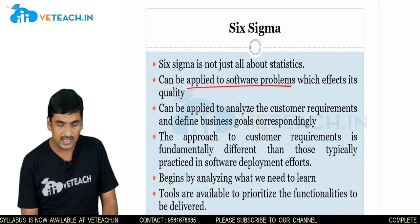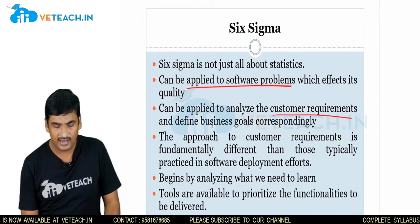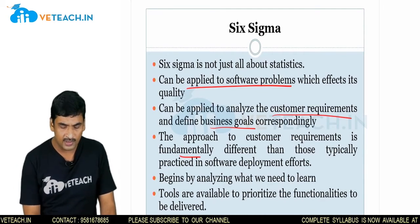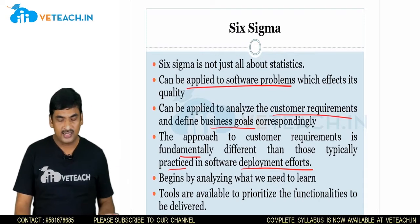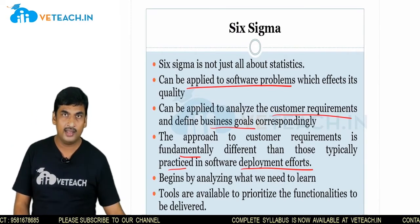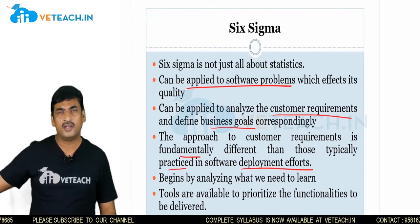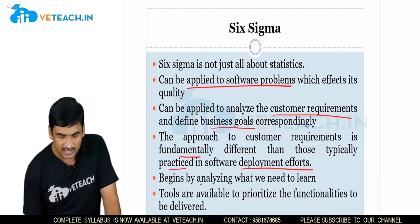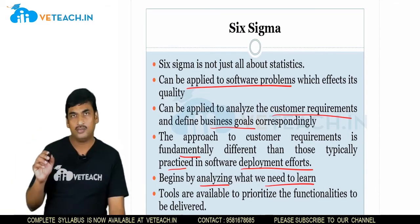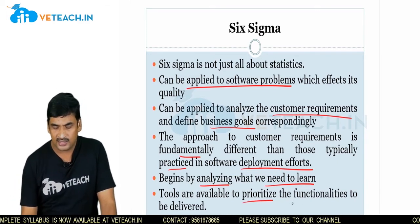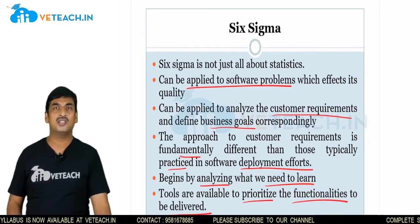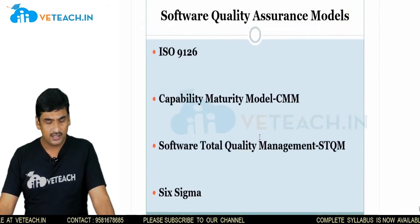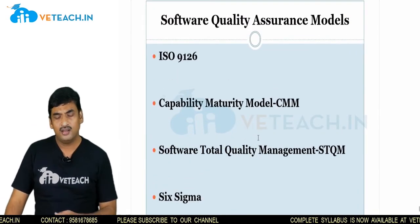Six Sigma is not just about statistics — it can be applied to software problems that affect quality. It can be used to analyze customer requirements and define business goals. The approach to gathering and analyzing customer requirements and measuring post-deployment customer satisfaction are fundamentally different, and Six Sigma addresses that difference. Tools are available to prioritize the functionalities to be delivered first to the customer.